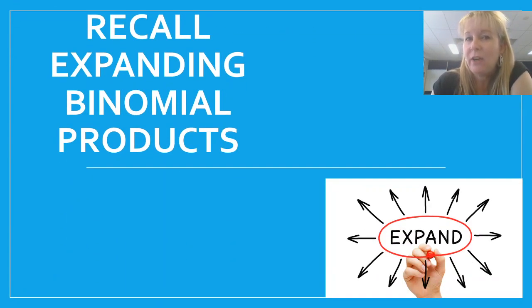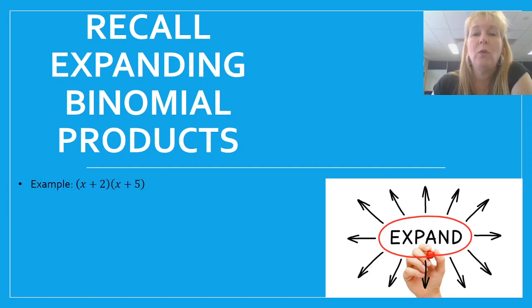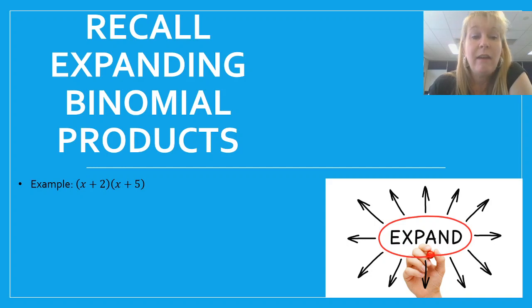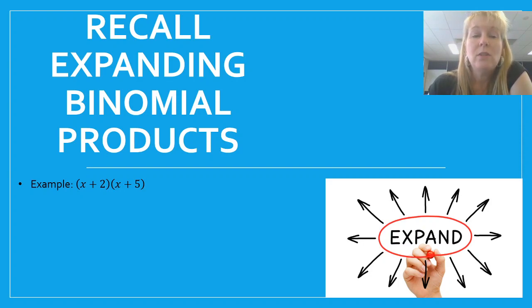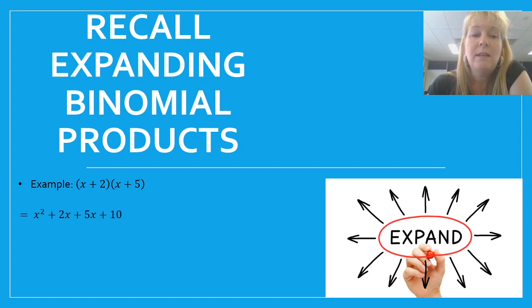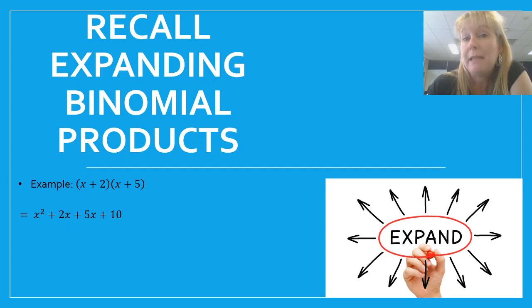Let's recall from our last video how to expand binomial products. If you're not sure what to do, go back and watch the previous video. We had an example x plus 2 multiplied by x plus 5 and we could expand that using FOIL — firsts, outsides, insides, last. So our first two terms x times x makes x squared, outsides 5 times x makes 5x, insides 2 times x is 2x, and last 2 times 5 is 10. We've got two like terms in the middle, 2x and 5x, and they add together to be 7x.